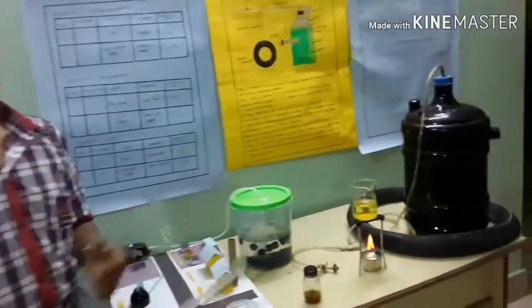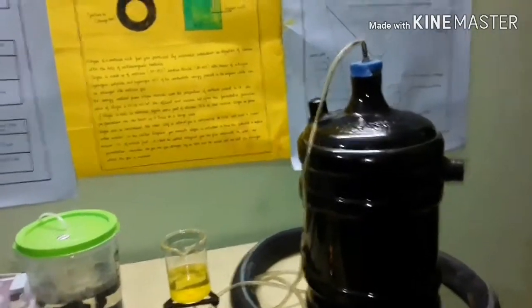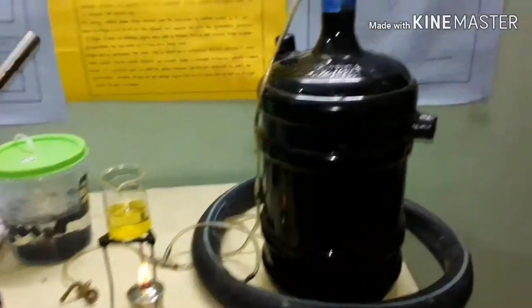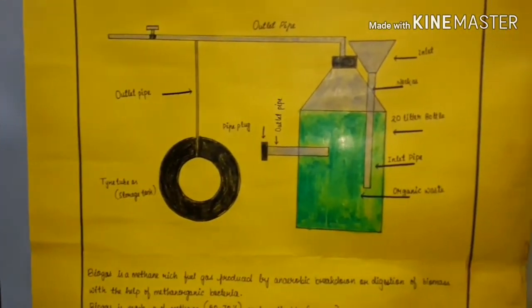At the last, we have mini biogas treatment plant. It is a mini version. The government is providing LPG cylinders to the poor people and the rural area. Once it is used, it is empty. After that, people don't have money to refill it again.